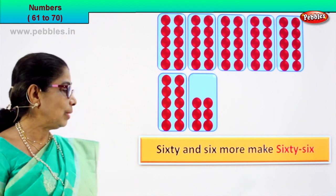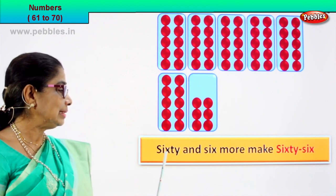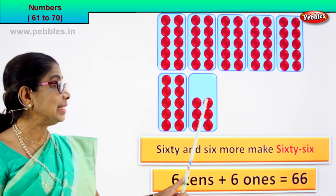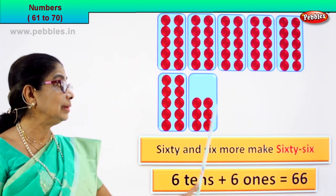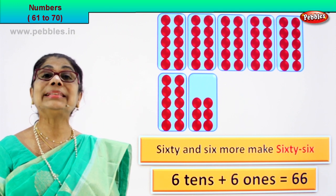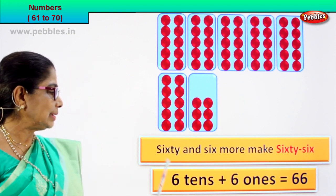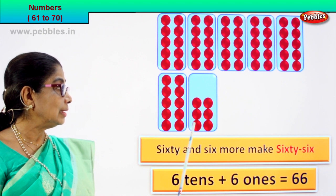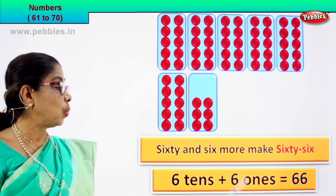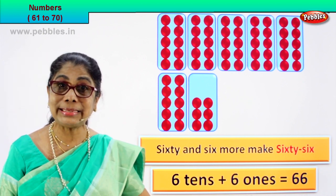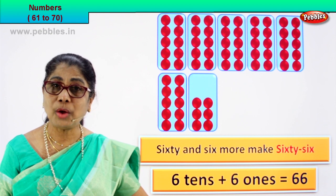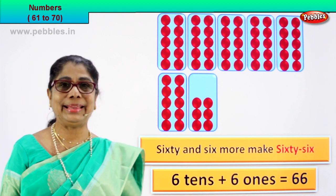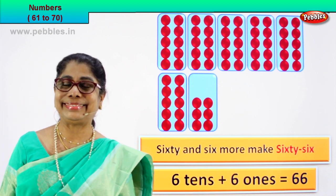What is six tens? Sixty. Six tens plus six ones equal to sixty-six. Six tens plus six ones equal to sixty-six is the number. How do you write its name? Sixty-six.